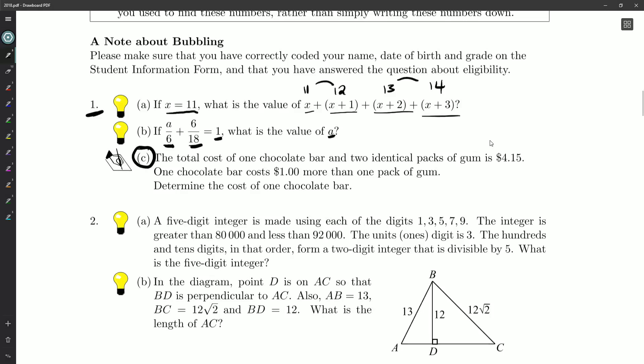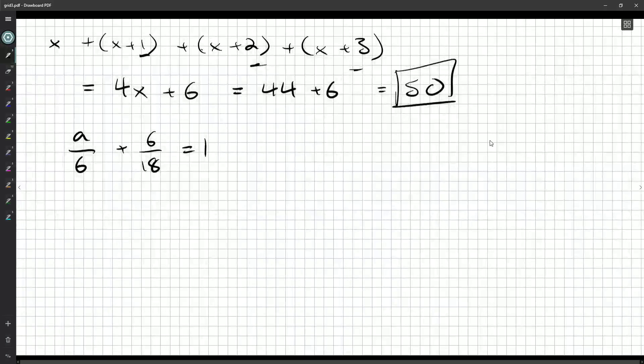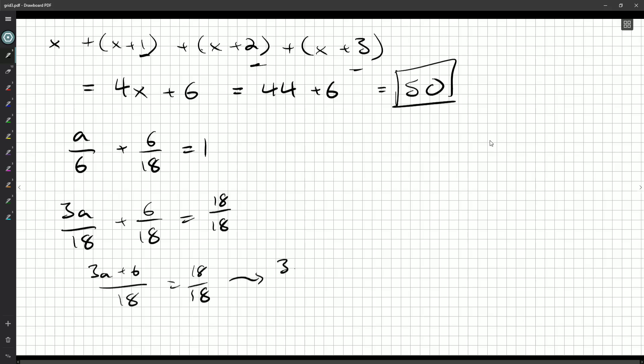There's lots of ways we could go about doing this. One thing we could do is get a common denominator. Multiply by 3: (3a + 6)/18 = 1, or 18/18. This tells me that 3a + 6 = 18. Subtract 6 from both sides: 3a = 12. Divide by 3: a = 4. That's a fine way to do the question, and you'll get the final answer of 4.